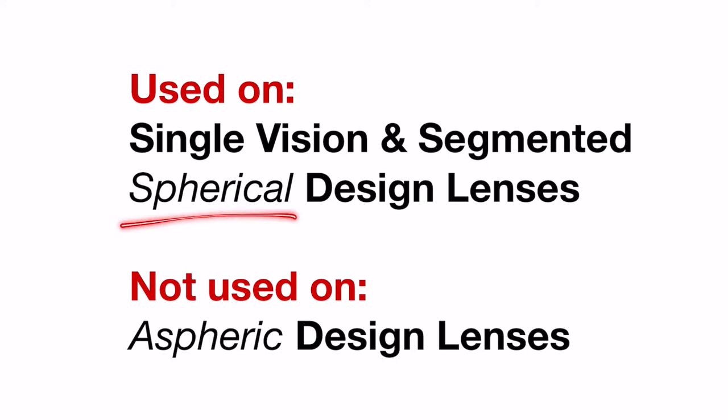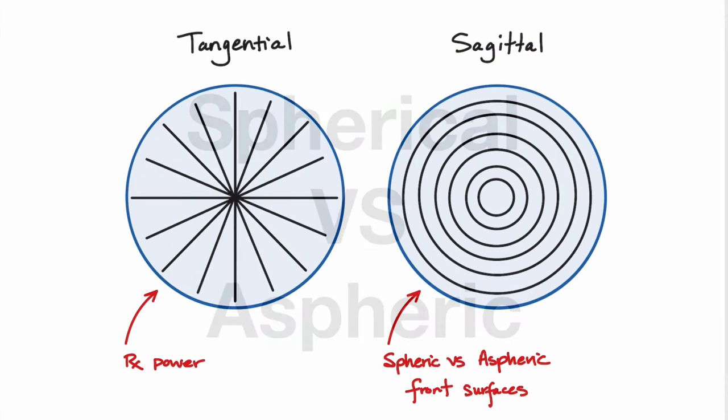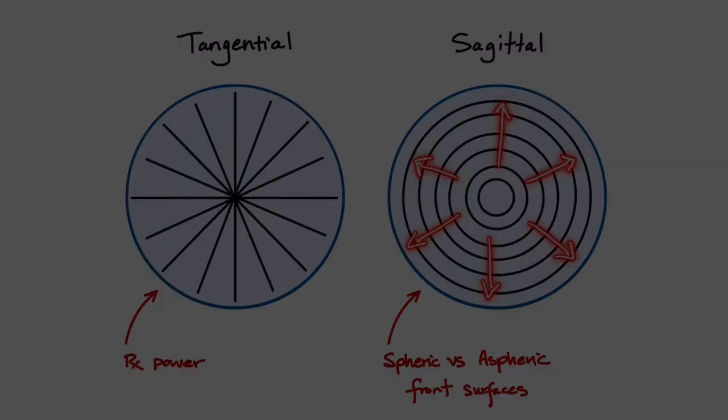When we're talking about spherically versus aspherically, we're referring to the front surface curve on the sagittal plane of the lens. This is the curve from the center to the edges of the lens going out and it's often seen as the profile of the curve.